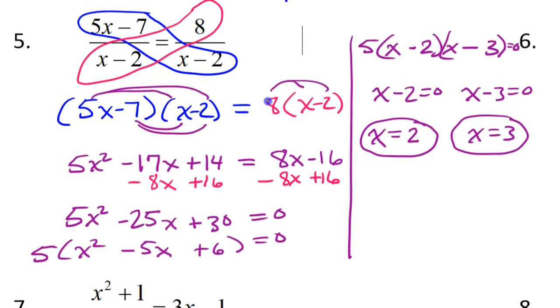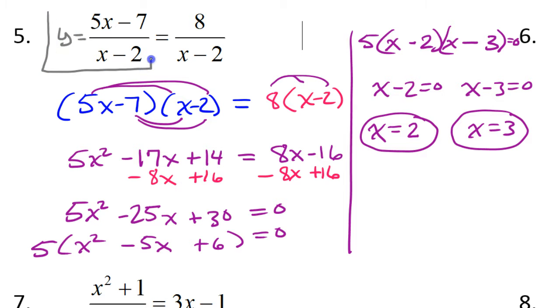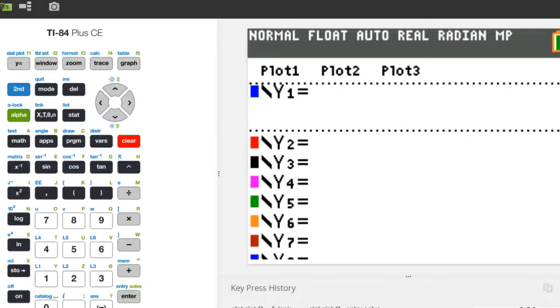Now if I want to solve this graphically, I'm going to take my original equation and rewrite it as two separate functions. I would have one function that would be Y equals 5x minus 7 over x minus 2. And then I'll make a new function, Y equals 8 over x minus 2. So these are my two functions. I'm going to graph these and see if I can find any intersection points.